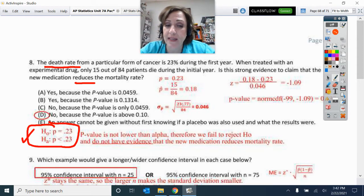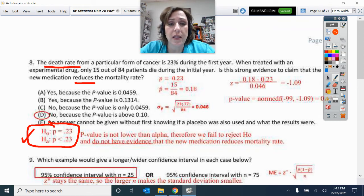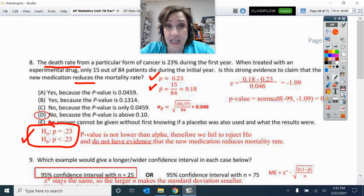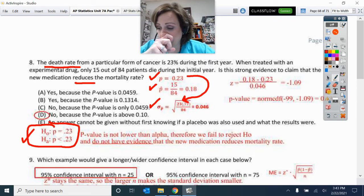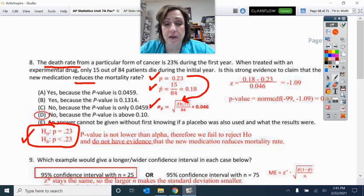Although E says the answer cannot be given without first knowing, and so that makes me think, do I need to check my conditions? And then it talks about placebo, so I'm like, okay, we're fine. So population P is 0.23. P hat is the sample results I got, 15 out of 84. Then I did this standard deviation.